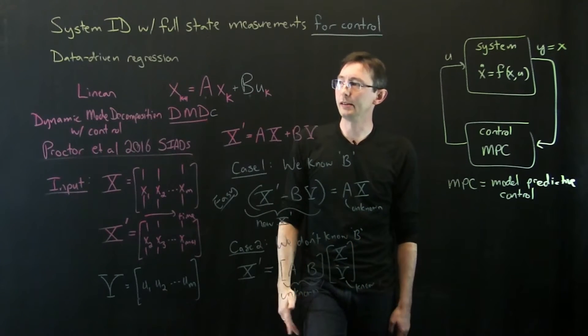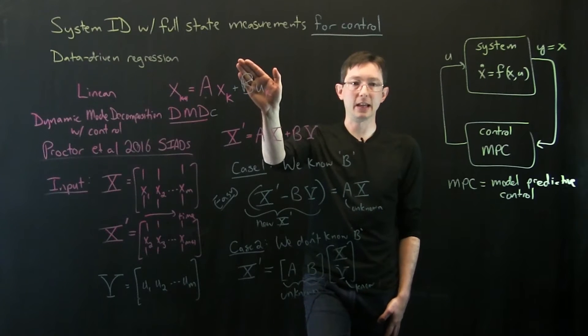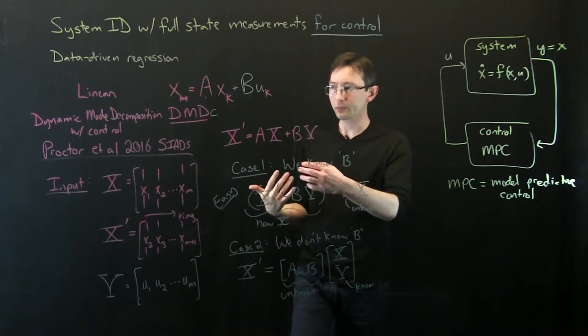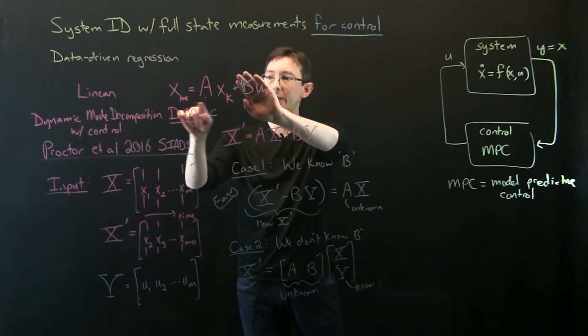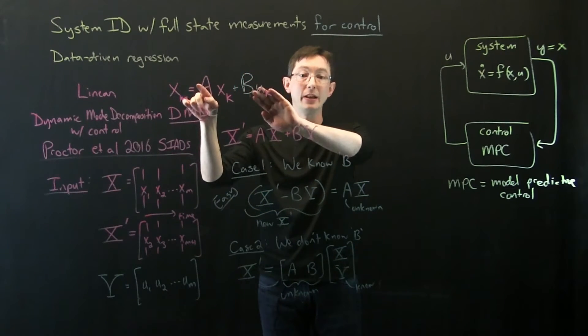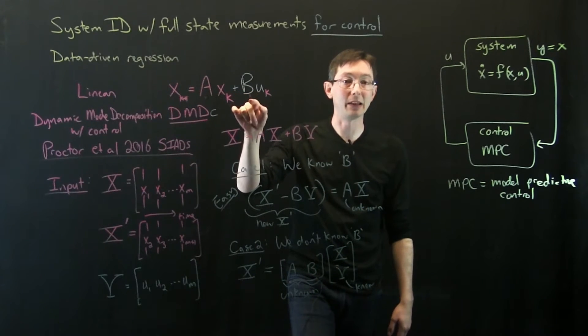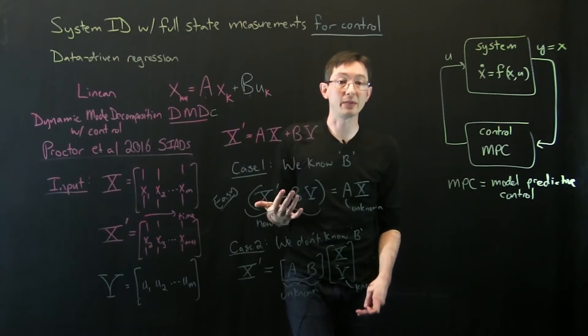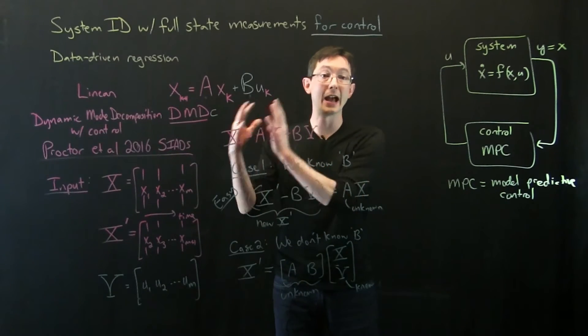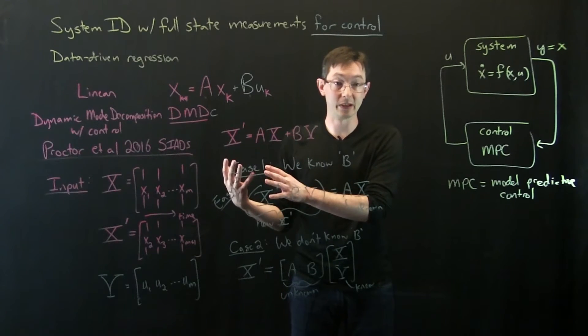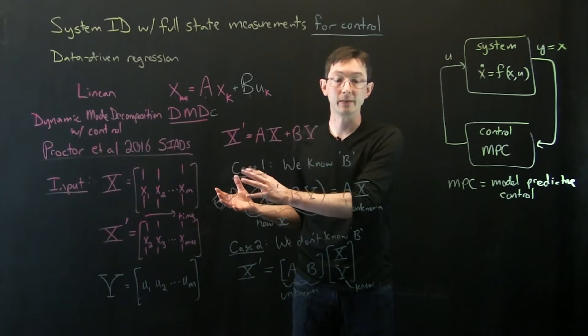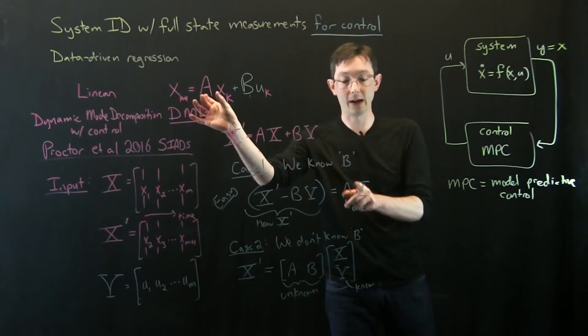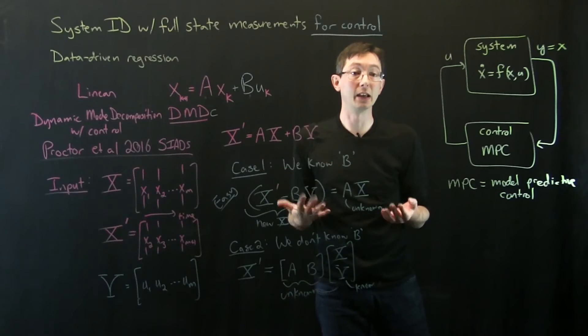One thing is, if you didn't take into account this plus B U, you would essentially just apply regular DMD to solve for an A matrix. But that A matrix would be contaminated by the effect of control that you're not taking into account. So we'll do a little MATLAB demo where we'll essentially compare what happens if you do naive DMD on a system that's being controlled. You'll get the wrong answer. And then we'll show that if you do this kind of corrected DMD with control, you can get the correct A dynamics taking into account B.